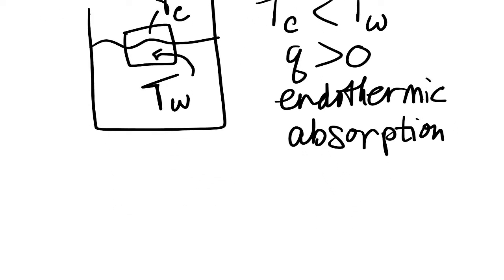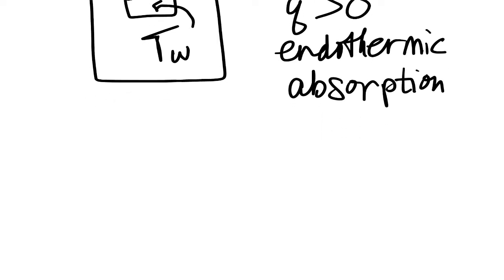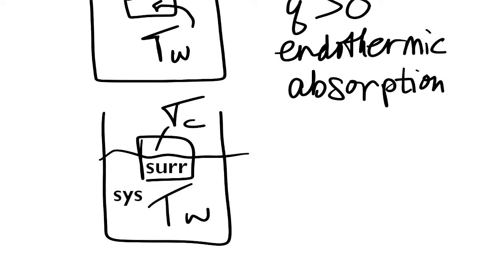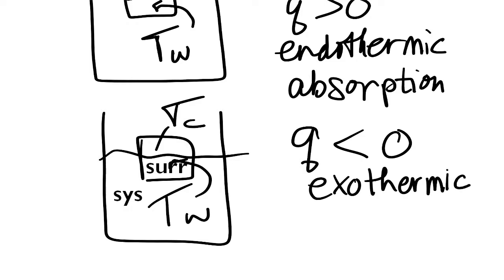On the other hand, let's say we redefine the system as the water. Since our system is defined as the water, the Q for the system in this case would be negative, because heat is flowing out from the water into the ice. Q negative is what we call exothermic due to release of heat, or release of thermal energy.